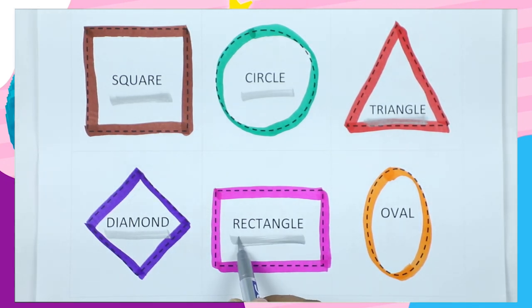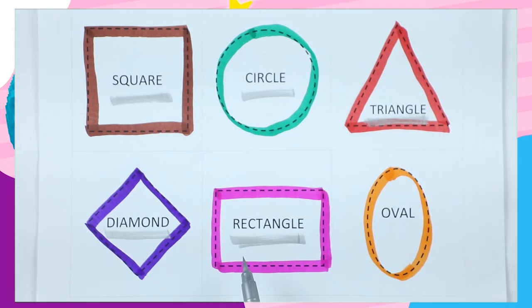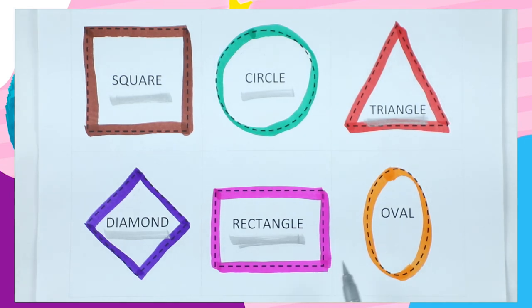Which shape is this? Rectangle. R-E-C-T-A-N-G-L-E. It's a rectangle with pink color.